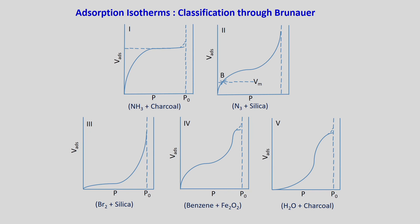Examples: adsorbing ammonia gas on charcoal gives a Type 1 curve; adsorbing N₂ on silica gives a Type 2 curve, where you can calculate the monolayer volume Vm from the sharp bend. Type 4 is similar — you can also calculate Vm. Types 3 and 5 are similar to each other; examples include adsorption of bromine on silica or adsorption of water on charcoal. These are the Brunauer classifications of isotherms.